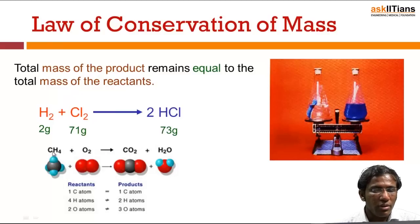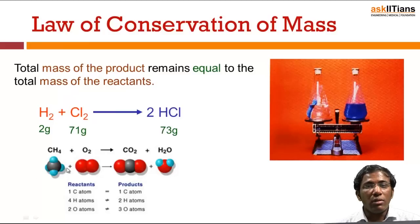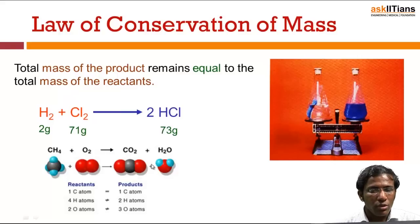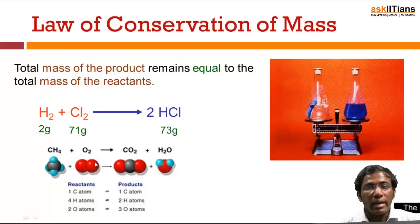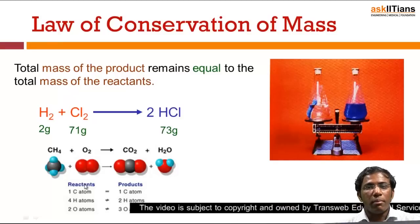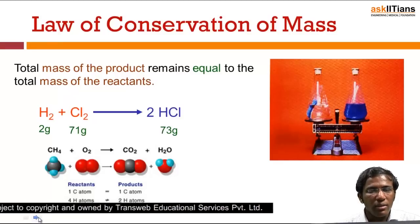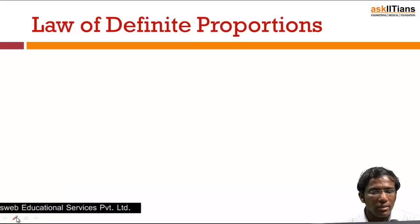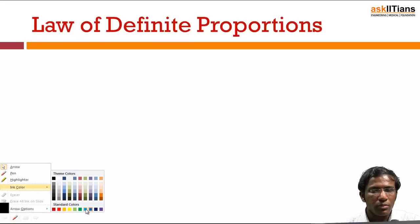Whatever the number of atoms of one particular type on the left hand side, they should be equal to the number of atoms of that type on the right hand side. For example, one carbon on the left hand side should also appear in the products. In this way we balance any chemical reaction, and that is based upon the law of conservation of mass.